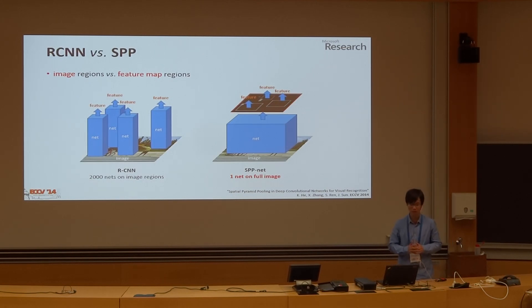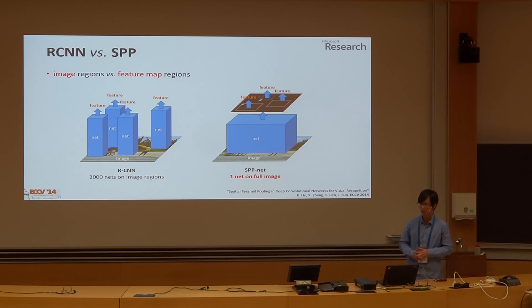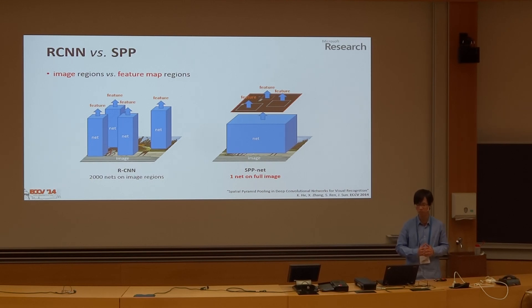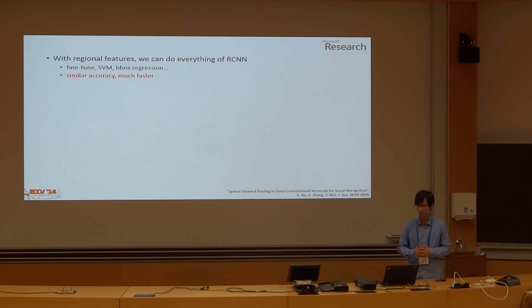How does our method compare with RCNN? In the case of RCNN, features are extracted from image regions. RCNN extracts about 2,000 image regions, warps each into a fixed size, and applies the entire network. So RCNN applies about 2,000 forward passes for a single image. For our method, we only need to apply all the convolutional layers once on the entire image to produce a feature map. On this feature map, we crop small regions and pool the features. In both cases we obtain regional features, but our method is much faster.